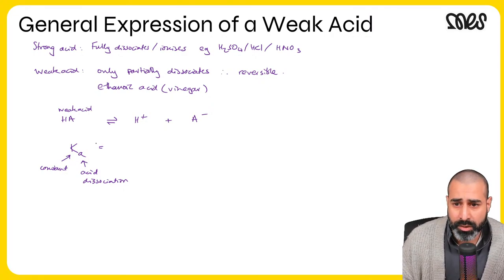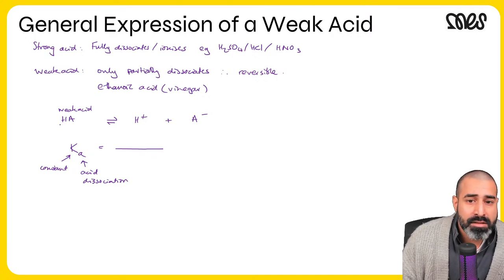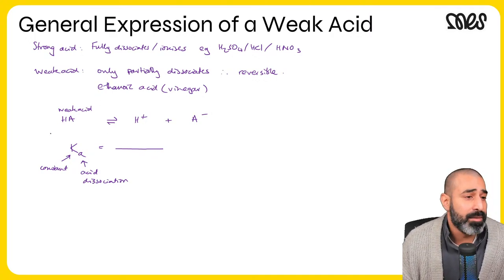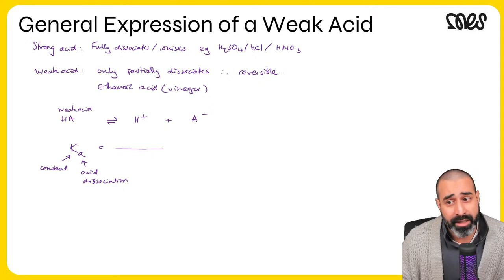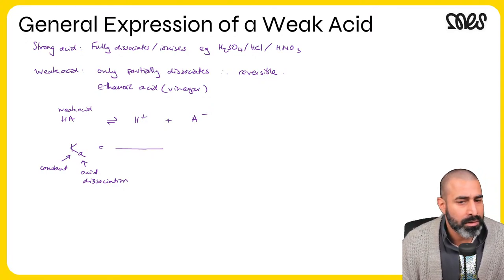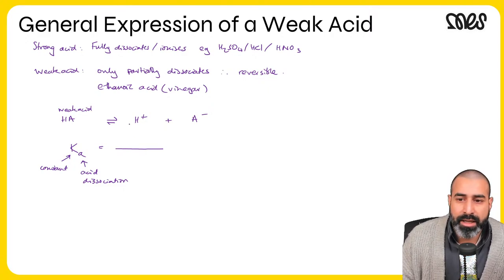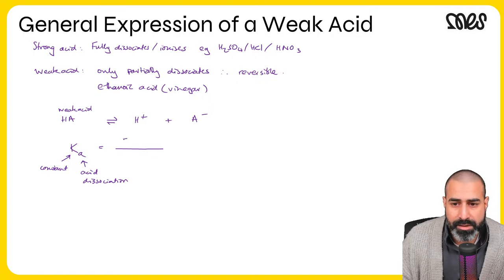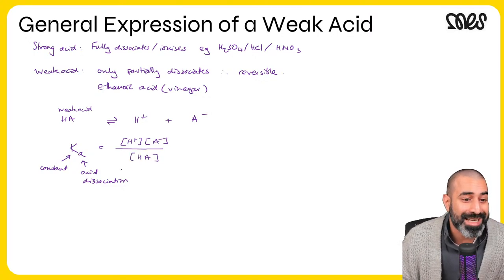By virtue of this being an equilibrium reaction — similar to what we've done with Kc and Kp — we can write an expression for the acid dissociation constant, Ka. Here K is for constant and lowercase a is for the acid dissociation. So Ka stands for the acid dissociation constant. For the weak acid HA, the numerator is the product of the concentration of H+ times the concentration of A minus, all over the concentration of HA.